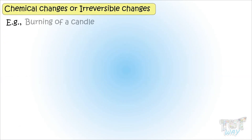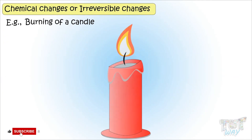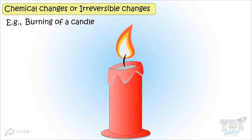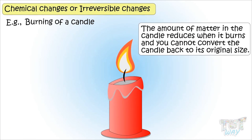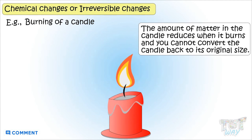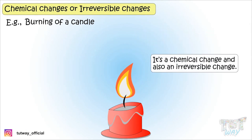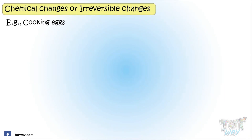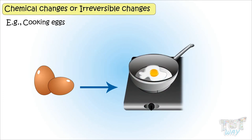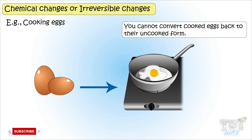Here is another example: a candle. When you light a candle, the size of the candle reduces with time, so the amount of matter is getting reduced, and you cannot convert the candle back to its original size. So it's a chemical change and also an irreversible change. Here is another example: cooking eggs. When we cook eggs, a new look of eggs appears and this change cannot be reversed — you cannot convert cooked eggs back to their uncooked form. So it's a chemical change or an irreversible change.